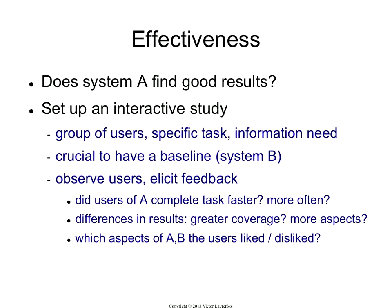As they're doing it, you observe the users and try to get feedback from them. Did the users of your system complete the task faster? Did they get a successful result more often? Is there a difference in results — did users of your system achieve greater coverage of whatever they were trying to find, or find different aspects? You can also ask subjective things like which interface they liked, but users always tend to like fancier interfaces even if they are slower and less useful. So subjective questions are kind of useless; what's useful is getting them to complete a task, watching the groups using system A versus system B, and measuring which is more effective.